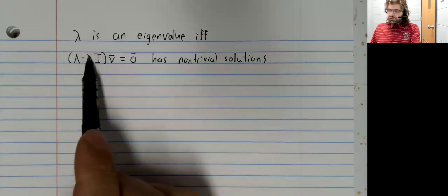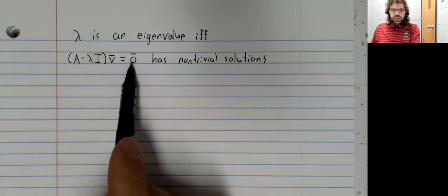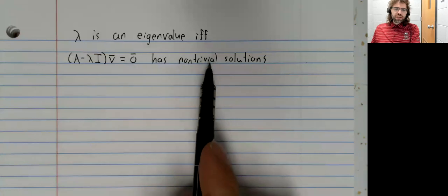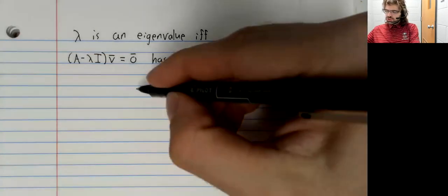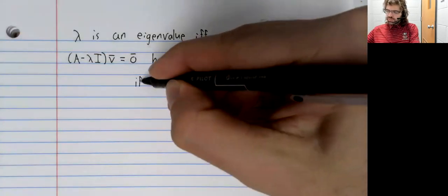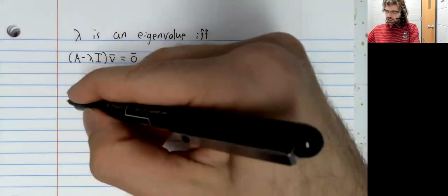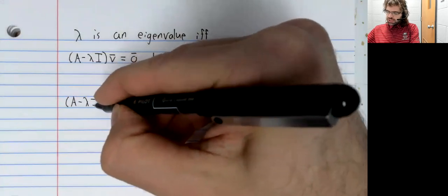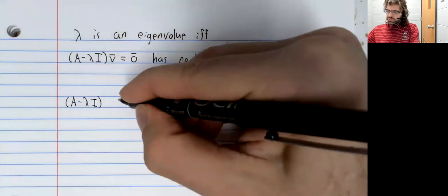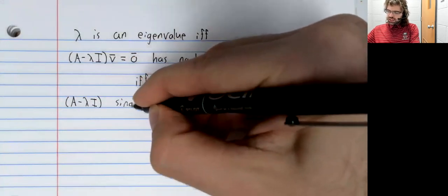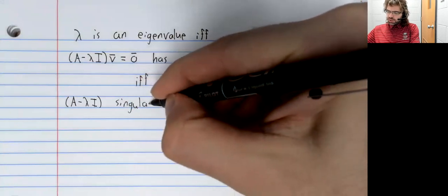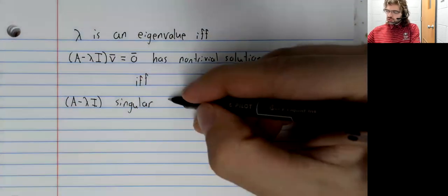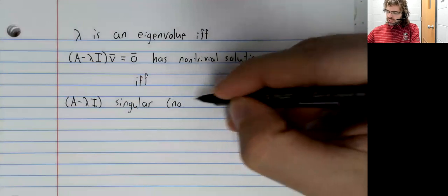A matrix times a vector equals zero has non-trivial solutions if and only if that matrix is singular, which means it has